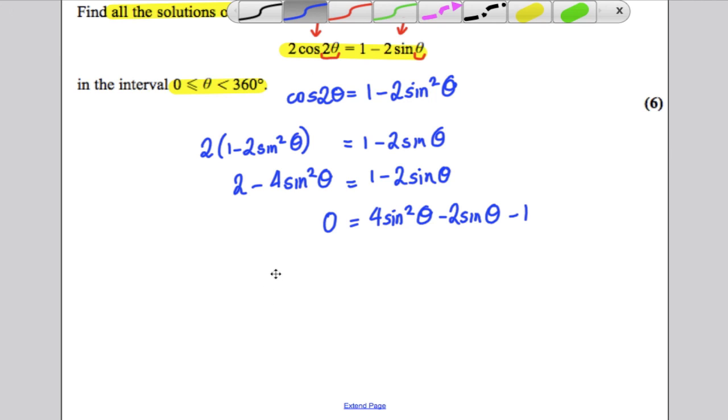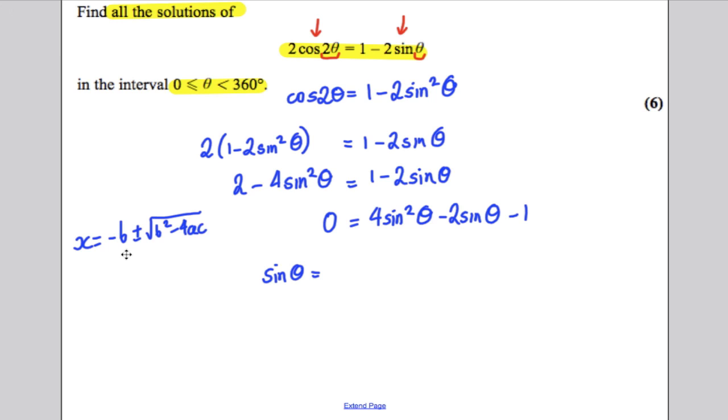So sine theta must be equal to negative b. Remember the quadratic formula that says x is equal to negative b plus or minus the square root of b squared subtract 4ac, all divided by 2a. So here to the quadratic formula,